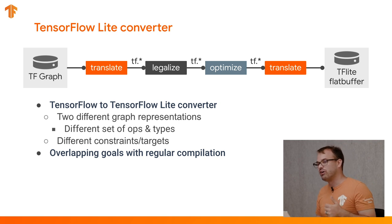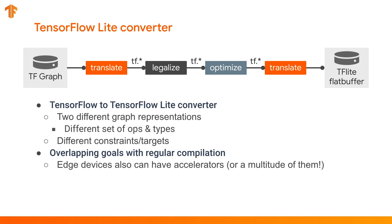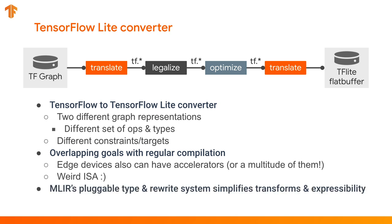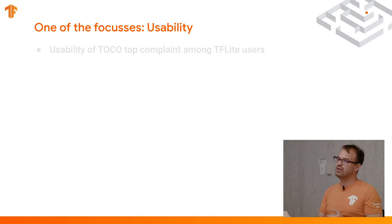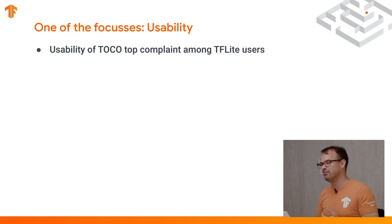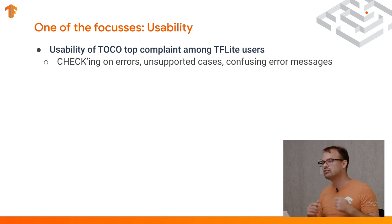Then beyond that, we have some optimizations and then translating it back out to the TensorFlow Lite flat buffer. The converter changes between two different graph representations — we have two different runtimes, TensorFlow and TensorFlow Lite, with different constraints and targets. But the graphs users want to train and run should be the same. The converter actually has overlapping goals with regular compilation, because edge devices can also have accelerators. Usability is one of TOCO's top complaints among TF Lite users: checking on errors, unsupported cases, confusing error messages — these are things we want to improve.